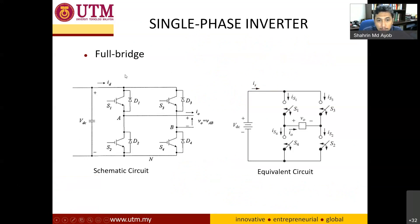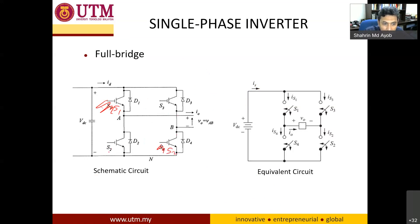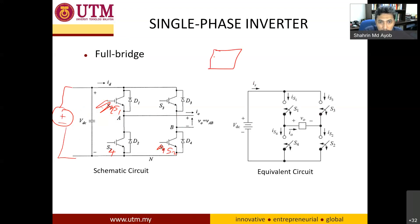Now, this is the single-phase full bridge inverter, which has four switches: S1, S2, S3, and S4. Please follow this naming — the labels on the diagram can be confusing. The circuit is connected to a DC voltage source, which can be the output from a rectifier.